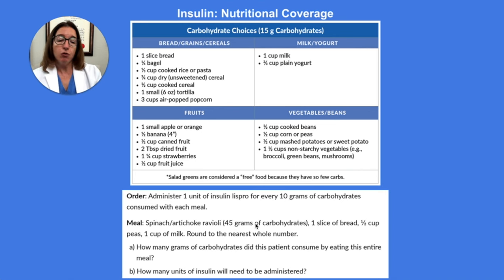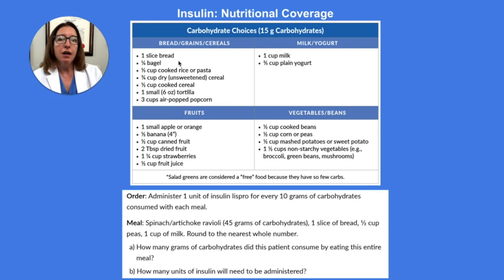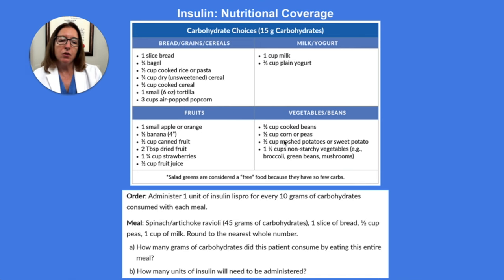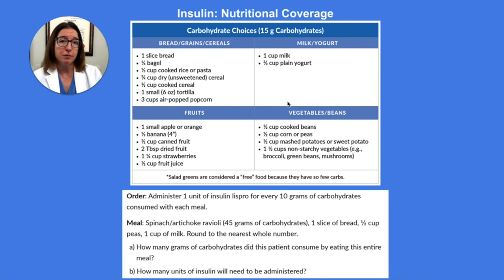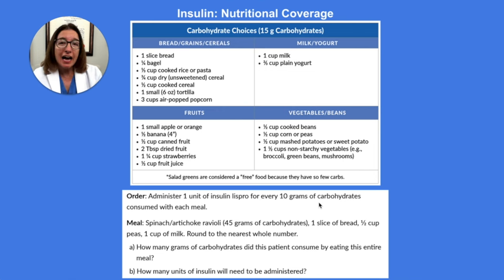We already know they got 45 grams from the ravioli. One slice of bread equals 15 grams of carbohydrates, bringing us to 60 grams. They also had a half cup of peas, which is another 15, so that's 75 grams. And then one cup of milk adds another 15, giving a total of 90 grams of carbohydrates with their meal. For a 1-to-10 ratio, we would give our patient 9 units of insulin to cover the 90 grams of carbohydrates.